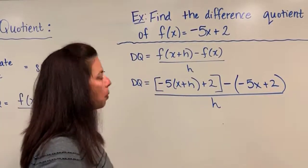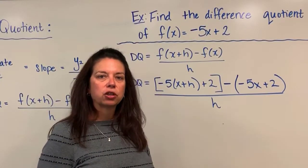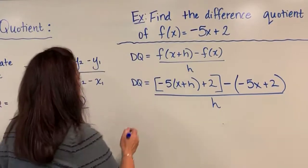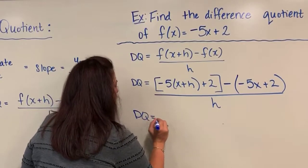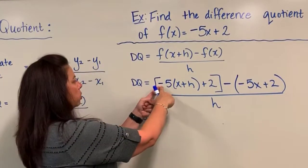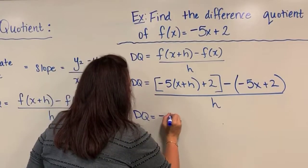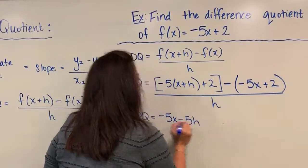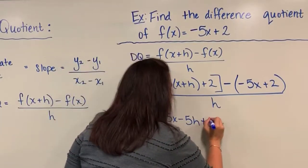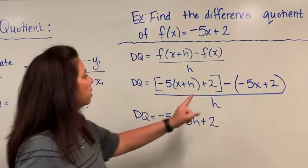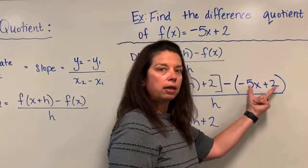Okay, at this point it's now just algebra of collecting like terms and simplifying as much as you can. So we have the difference quotient is equal to... I want to distribute my negative 5 on both x and h, so I have negative 5x subtract 5h add 2, then I will subtract this whole quantity and I will do so carefully by distributing my negative throughout both of those terms.